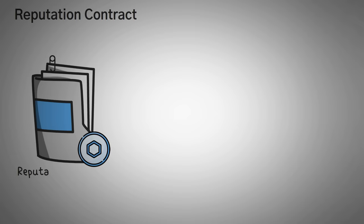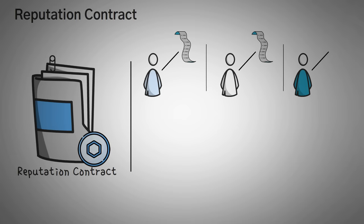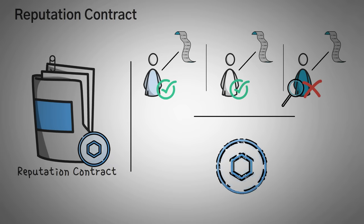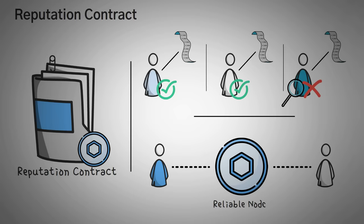First, Chainlink's reputation contract evaluates the track record of an oracle to determine its performance history and authenticity, and then will basically remove a bunch of unreliable or inaccurate nodes. To put it in a way that's easier to understand, this contract basically checks to make sure that wherever we're getting the data from can be trusted.